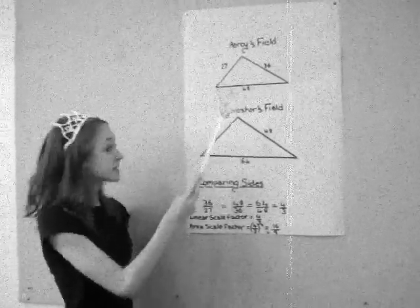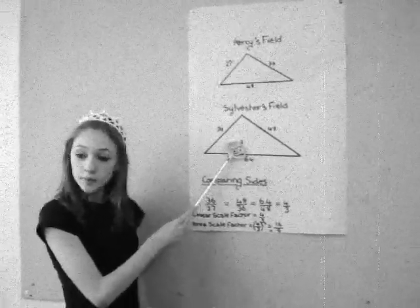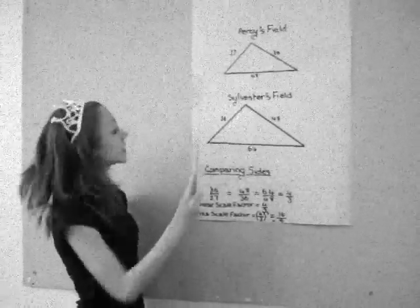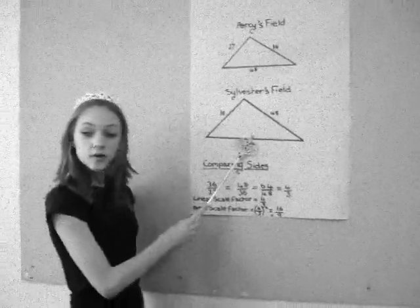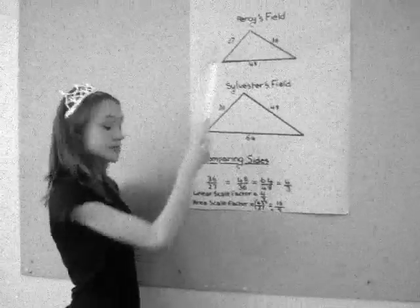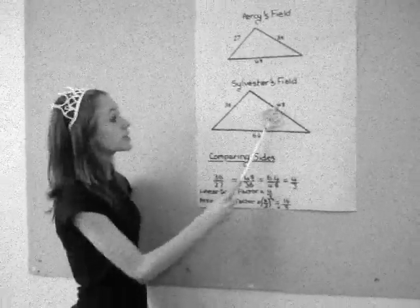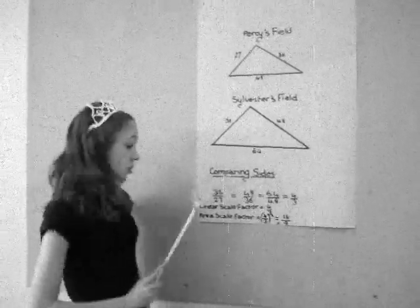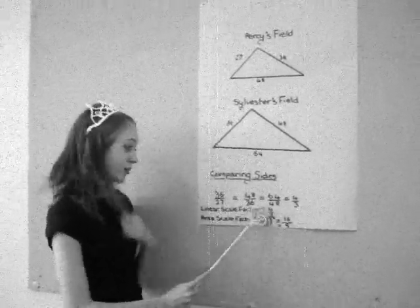Now Percy, we have your field's sides and Sylvester's. I've labelled them with the sizes, so we have 27, 36 and 48 on yours Percy, and 36, 48 and 64 on yours. So let's compare the size. Well, we have a ratio of 36 to 27, which is equal to 48 to 36, and 64 to 48, which is equal to 4 thirds, so the linear scale factor is 4 thirds.